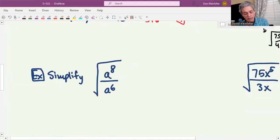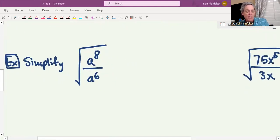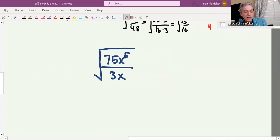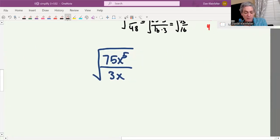Here's one with variables in it. For this one, I think I will simplify inside the radical first. A to the eighth power divided by A to the sixth power will be A squared. We're taking the square root of A squared, and that'll just be A. Not too bad there.